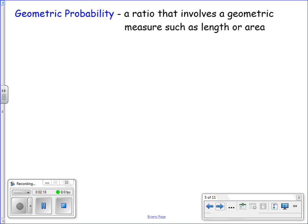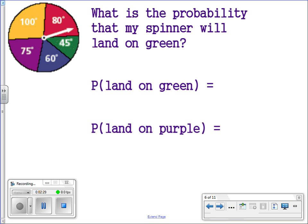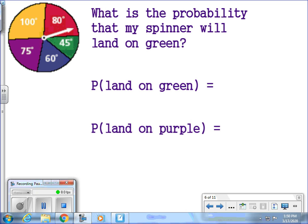Geometric probability is a ratio that involves a geometric measure such as length or area. So for our next problem here, what is the probability that my spinner will land on green? If you look at my spinner, you will notice that each section is marked by a degree. So we have 80 degrees in red, 45 degrees in green, 60 degrees in blue, 75 degrees in purple,